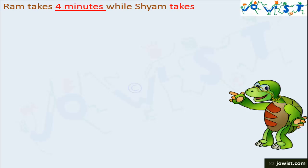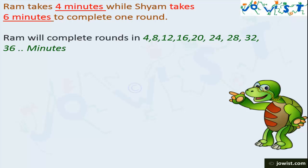Ram takes 4 minutes while Shyam takes 6 minutes to complete one round. Ram will complete the first round after 4 minutes. Then, the second round will be completed after 8 minutes. Third will be after 12 minutes. Fourth will be after 16 minutes. Then 20 minutes, then 24 minutes, after that 28 minutes, 32 minutes, 36 minutes, and so on.